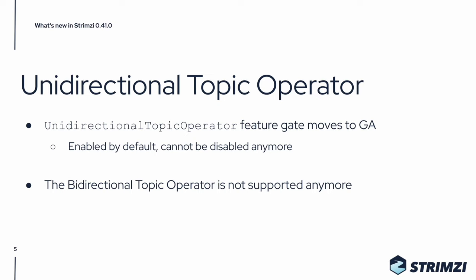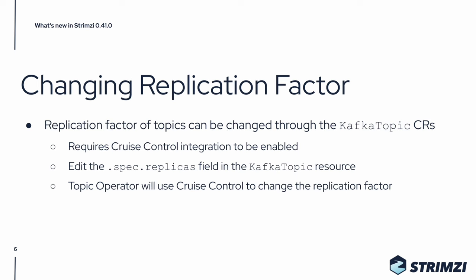The next big new feature in this release also includes the topic operator. You can now use the topic operator and the Kafka topic custom resources to change the replication factor of your topics. It requires Cruise Control integration to be enabled. And if you have that, then all you need to do is to change the spec replicas field in the Kafka topic resource, and the topic operator with the help of Cruise Control will change the replication factor for that topic.